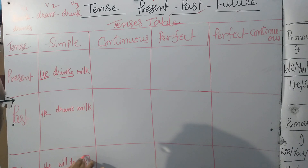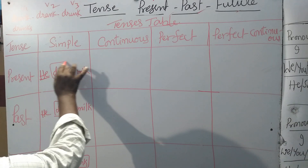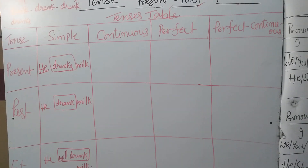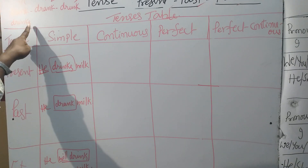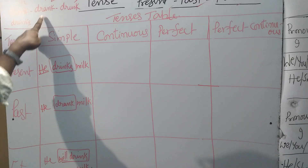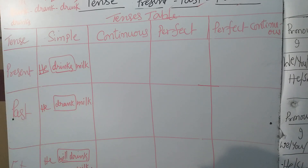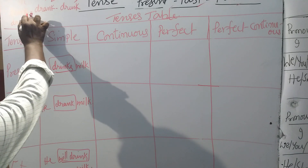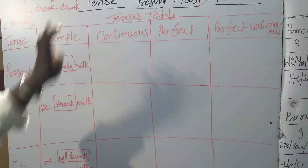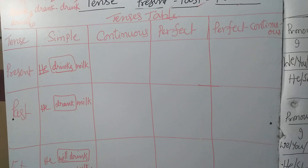So my dear students, you should be very careful about the construction of sentences. Simple present: singular subject takes 'S' on verb. Simple past: V2 verb as it is — no difference for singular or plural. Simple future: V1 plural verb with 'will' before it. So this is the same rule we have to apply for all verbs.